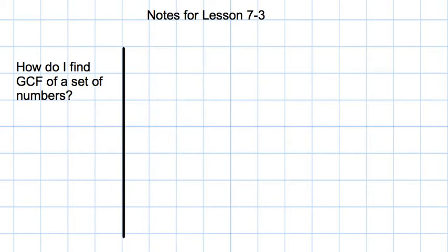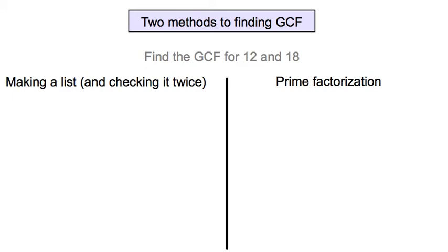Here are our notes for lesson 7-3, and it's pretty simple. How do I find the greatest common factor of a set of numbers? Here are our two methods: one is to make a list and check it twice, and the other is prime factorization. The one I'm going to do mostly today is prime factorization. I think it's the neatest and requires a little bit more space but less overall work, and it prevents common mistakes that you get when you're doing listing.